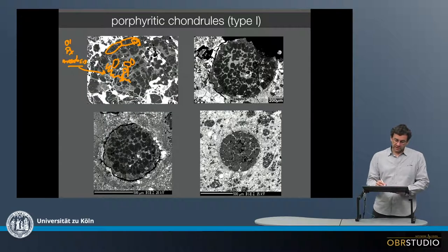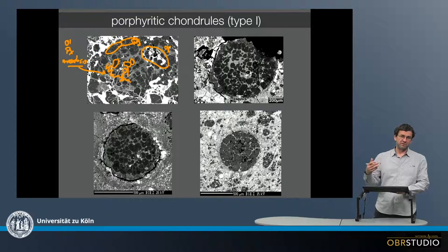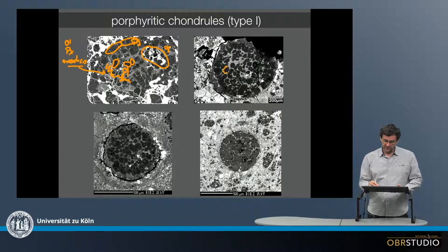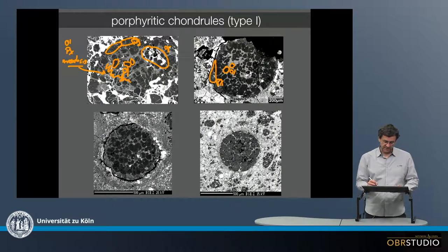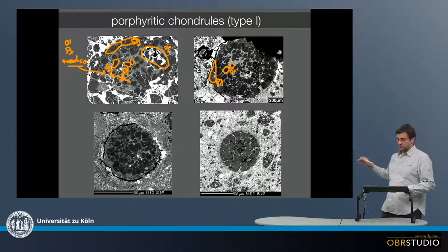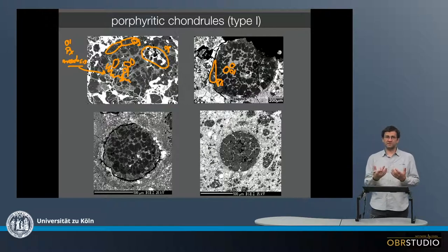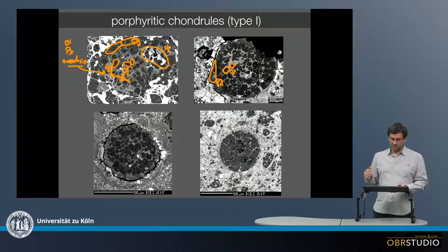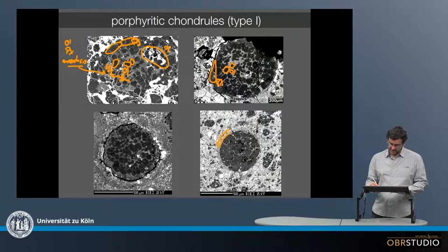The iron is stored either in opaque phases — for example, this might be metal or sulfide — or in type 2 chondrules in the silicates, because these are more iron-rich. In all of these porphyritic chondrules there is always olivine, and at the border very often there is pyroxene. Some chondrules also show a kind of dust rim, where all of this is matrix around but there is a distinct additional rim that must have accreted onto the chondrule later, or maybe added on the parent body.